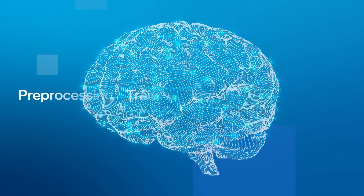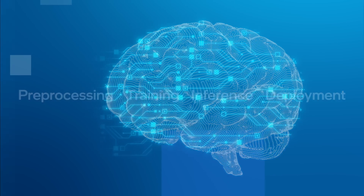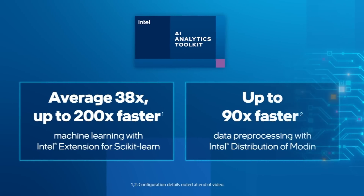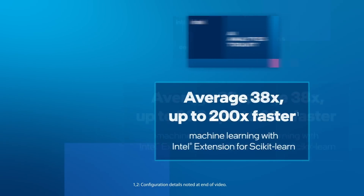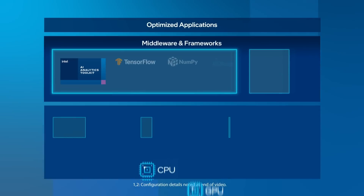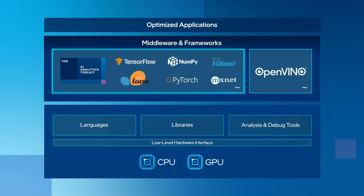Managing data across AI pipelines is challenging, with the need to maximize performance everywhere. The right software tools can help. The Intel AI Analytics Toolkit equips developers, data scientists, and researchers with a comprehensive set of tools that help accelerate end-to-end data science and machine learning pipelines on Intel architecture.